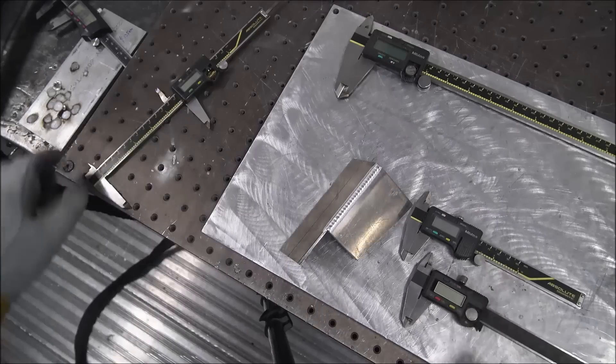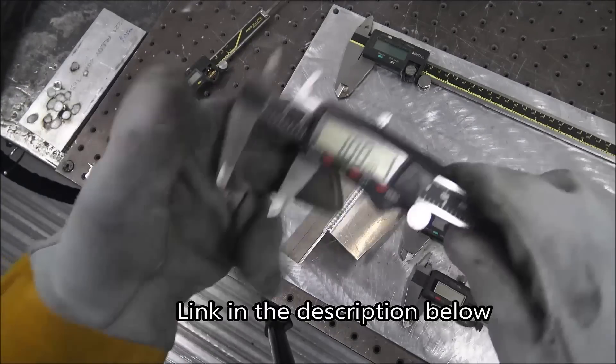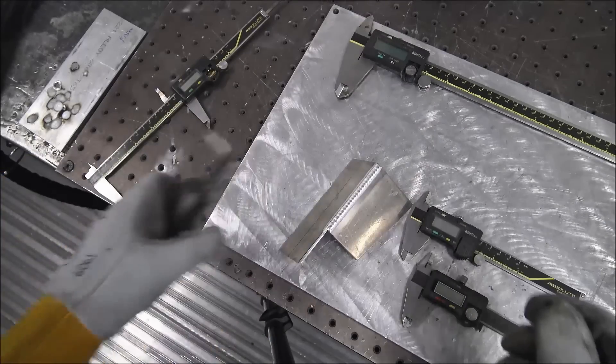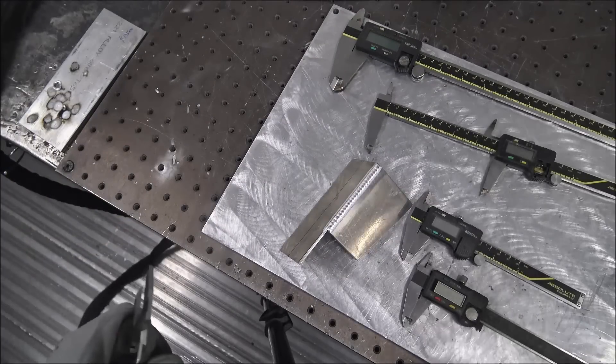So I'd recommend you get a cheaper pair, like these Husky ones from Home Depot I think or something on Amazon if you're using them for marking out parts. And then keep these nicer Mitutoyo ones for actual machinist work.